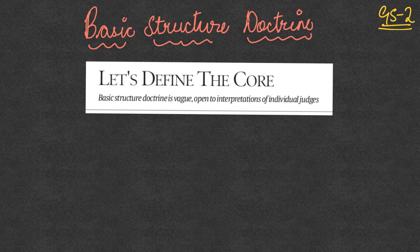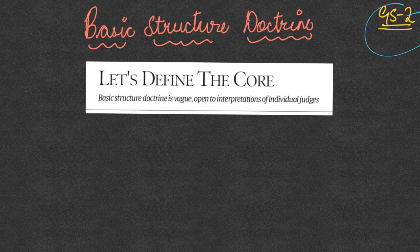The first topic is the basic structure doctrine, which is part of your constitution and parliament topic under the GA syllabus. We already know what the basic structure doctrine is — it evolved under the Kesavananda Bharati case, in which the Supreme Court held that parliament does not have unlimited power to amend the constitution. Parliament can amend any part of the constitution, but it cannot change or alter what is called the basic structure.